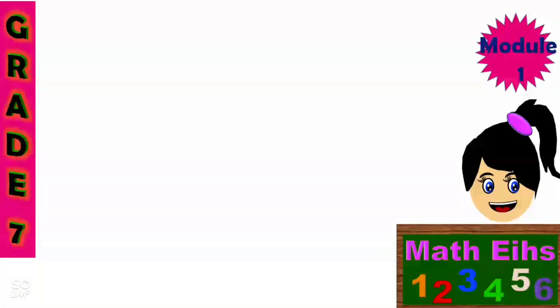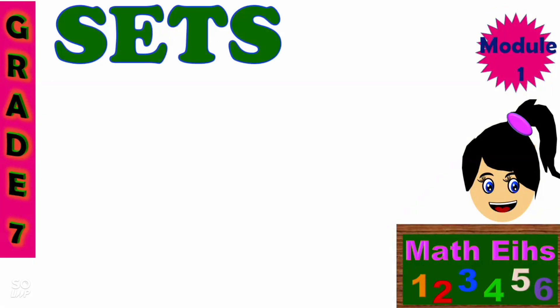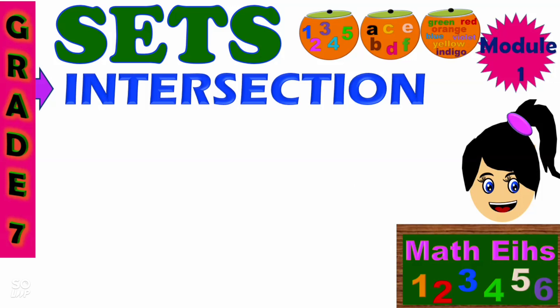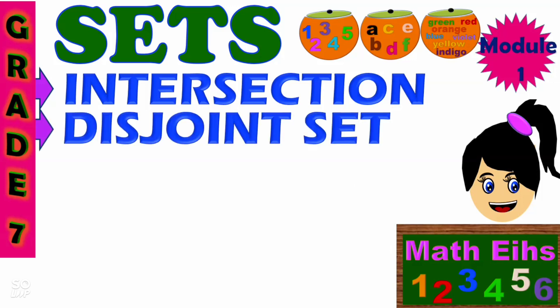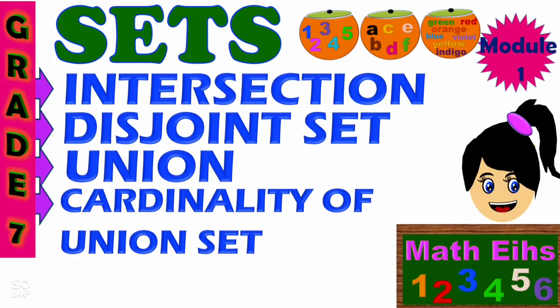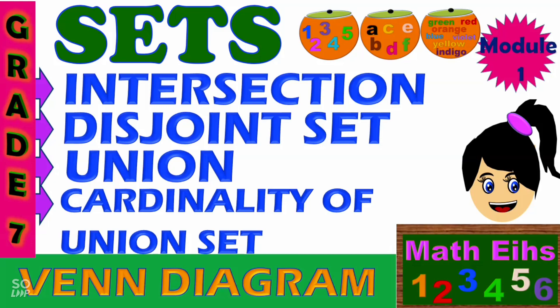Hello, we have another lesson for Grade 7 Math, which is for First Quarter, Module 1: Sets. We're going to study Lesson 2.1, Union and Intersection of Sets. In this video, we will discuss the intersection, disjoint set, union, cardinality of union sets, and I'm going to represent the union and intersection of sets using Venn diagrams.